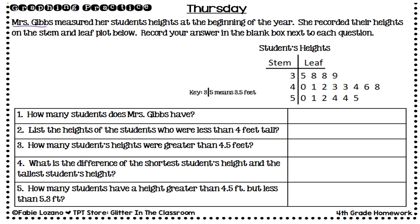Mrs. Gibbs measured her students' heights at the beginning of the year and recorded them on the stem and leaf plot. Here is that stem and leaf plot along with its key — very important to pay attention to this. The key tells us that the stem is the ones place and the leaf is the tenths place, so these represent decimal numbers, not regular two-digit numbers.